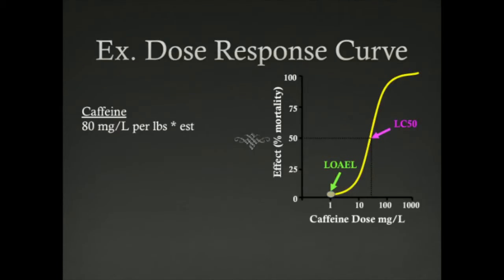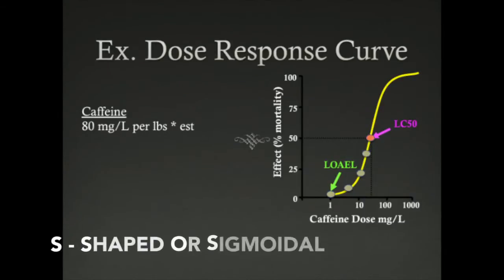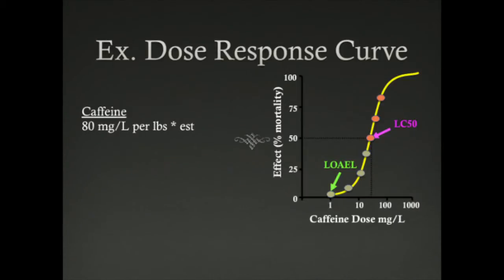The first feeling of alertness would be the lowest observable adverse effect and maybe less than 80 mg depending on you as an individual. As you drink more coffee, you increase the amount of caffeine per liter in your plasma. There will be a point where you feel jittery — this will become another data point on the graph. The dose-response curve is S-shaped and will be filled out with points that represent different doses of caffeine and the adverse effects it produces.